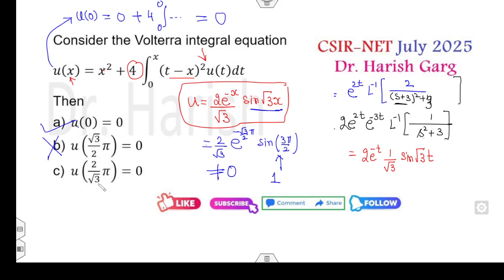What is the value of 2 divided by root 3? Once you can substitute that 2 divided by root 3, it is sine of 2 pi, which is 0. So yes, this answer is 0.